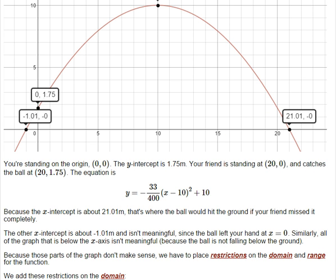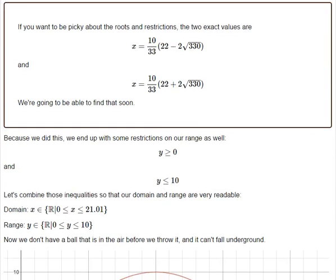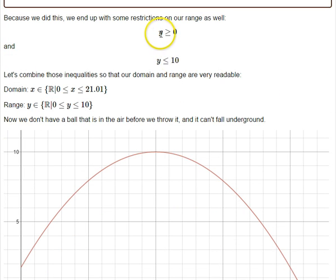On the range, it's going to go from 1.75 up to 10 and back down to 1.75 or maybe 0, depending on whether they catch the ball. So I'm going to skip past a little bit of this, but we do want y to be positive, and y has to be less than or equal to 10.